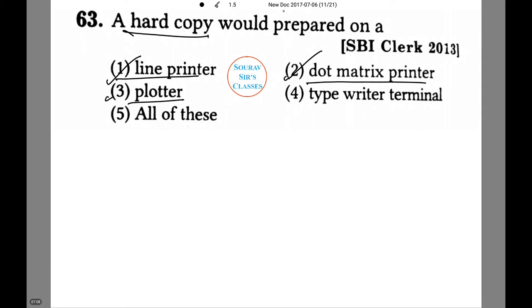A plotter? Yes, a plotter is also another output device. And a typewriter terminal? A typewriter is again considered one of the major and one of the first devices to produce a hard copy. Hence option number five will be the final answer.